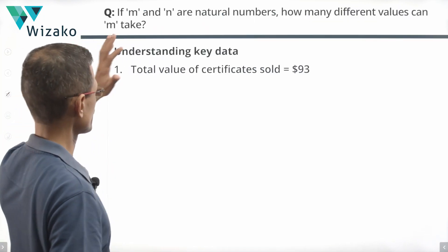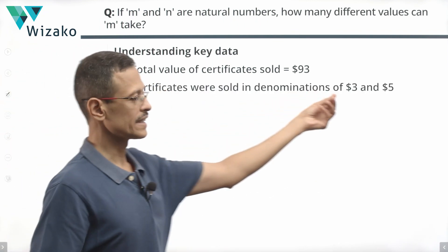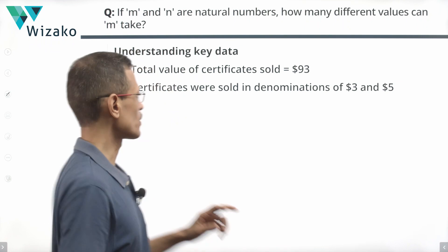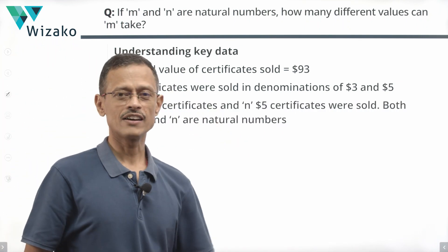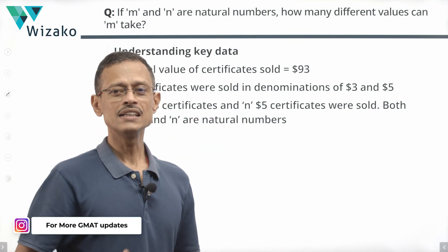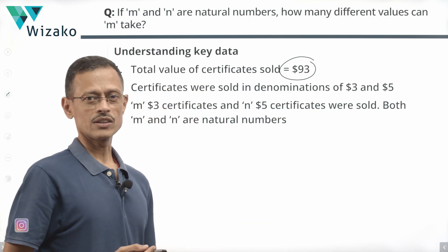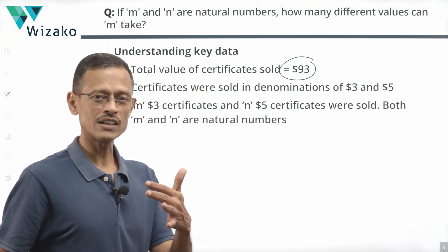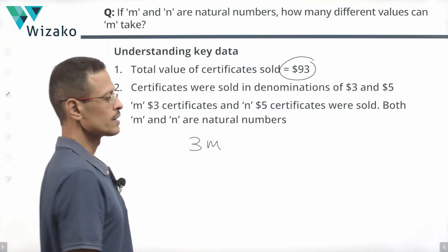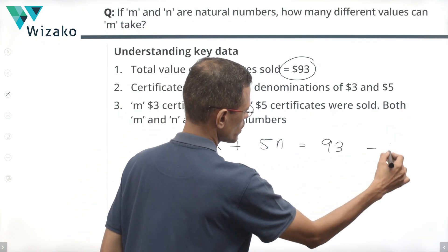Let me put together the key data from this question. The total value of all certificates sold is $93, in denominations of $3 and $5 — M $3-certificates and N $5-certificates. Both M and N are natural numbers. Framing the equation: the value of all $3-certificates is 3M, the value of all $5-certificates is 5N, and the total is 93. So the equation is 3M + 5N = 93.